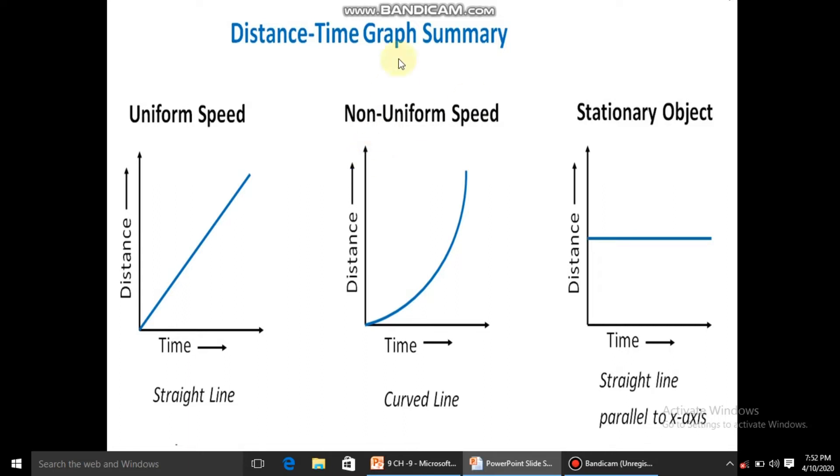In case of uniform speed, the distance-time graph gives a straight line between distance and time, showing an object is moving with uniform speed. In case of non-uniform speed, a curved line is shown which indicates that distance and time is not in equal proportion. For a stationary object, a straight line parallel to x-axis is shown, where time increases but distance remains the same.